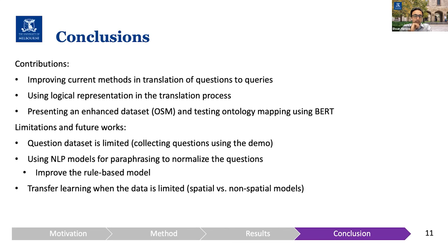The limitation of the work is mainly based on the dataset. Datasets for geospatial queries are quite limited — often in the hundreds. What we have used is the most well-known one: 200 questions and 200 geospatial queries. We are trying to collect more questions via the demo. We also want to try paraphrasing NLP models to normalize questions, because language flexibility is a challenge for our rule-based approach. Transfer learning could also be an option, partially reusing methods for generating SPARQL queries from natural language.